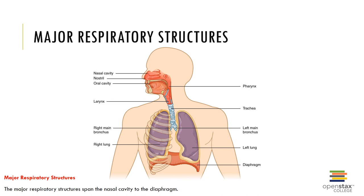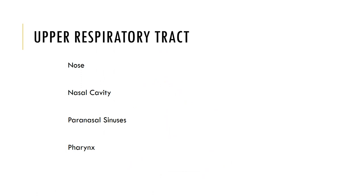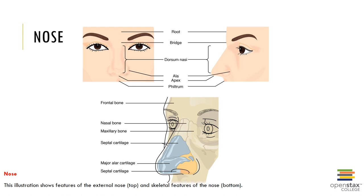Let's examine the upper respiratory tract first. This includes the nose, nasal cavity, paranasal sinuses, and pharynx. The nose is the primary passageway for air entering the respiratory system when you are resting and breathing quietly. The nose consists of several structures including the bridge of the nose, the nasal septum, the nasal cartilages, and the external nares.